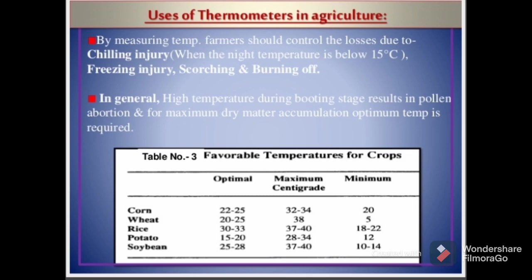For rice, the optimal is 30 to 33 degrees Celsius, maximum of 37 to 40 degrees Celsius, and a minimum of 18 to 22 degrees Celsius. For potato, it should be 15 to 20 degrees Celsius optimal, maximum of 28 to 34, and a minimum of 12 degrees Celsius. For soybean, it should be 25 to 28 for optimal temperature, maximum of 37 to 40, and minimum of 10 degrees Celsius.